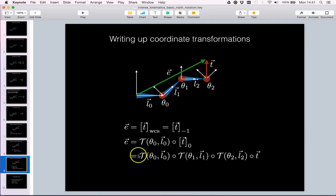And writing out all our expressions so far we will see that we now have the formula we need. We take the tooltip vector and transform it by link 2, theta 2, L2 by link 1 and finally by link 0 to get the end effector position.